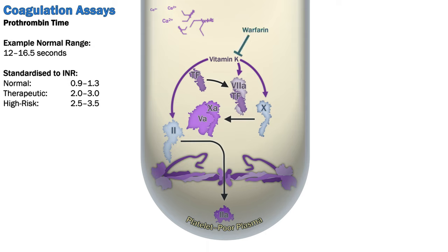The INR is also a useful marker of liver synthetic function, but does not reliably correlate with bleeding risk in that case, as the liver produces all prothrombotic factors besides von Willebrand factor, as well as many antithrombotic factors such as protein S and C, which are also vitamin K dependent. Due to the nature of positive feedback, INR is particularly sensitive for abnormalities in factor 7 and relatively insensitive to abnormalities further down the pathway. For example, patients on DOACs that inhibit Xa and thrombin tend to have an INR in the normal to mildly elevated range.